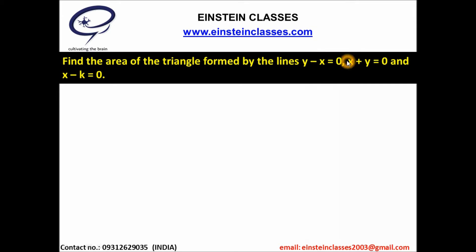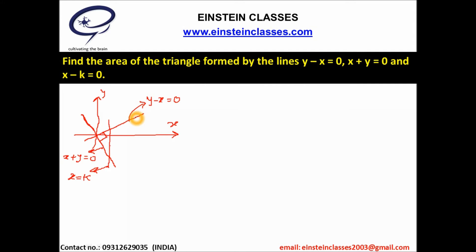These three lines are forming a right angle triangle. Since these two lines are passing through the origin, one vertex of the triangle will be at the origin. The other two vertices we can calculate, and then we can find the area of the triangle. The line y minus x equal to 0 passes through the origin, x plus y equal to 0 passes through the origin, and x equal to k is the third line.